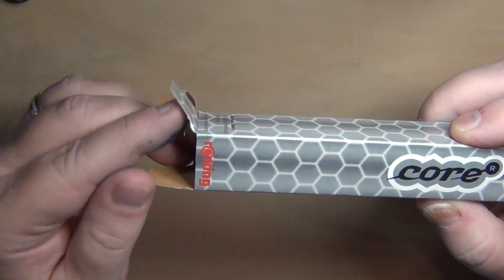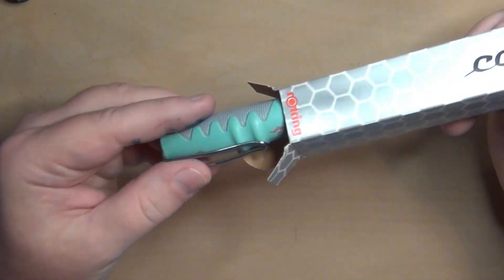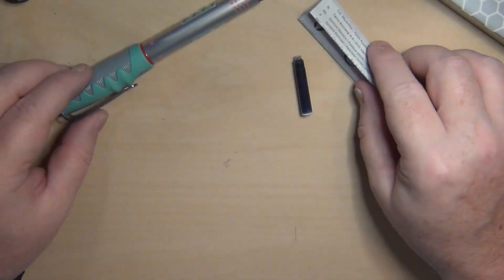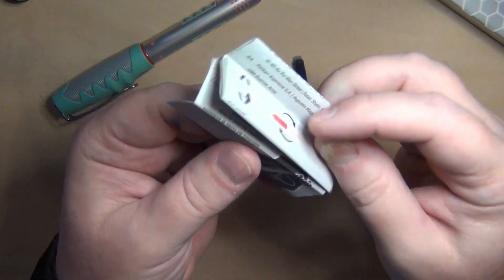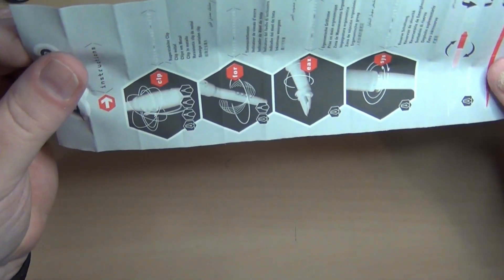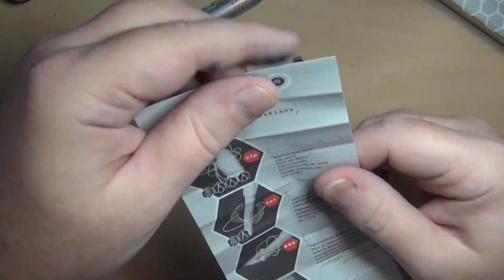So opening it up this is the box that it came in just like this and you've got a little booklet and a cartridge. So here you've got instructions on this particular pen.